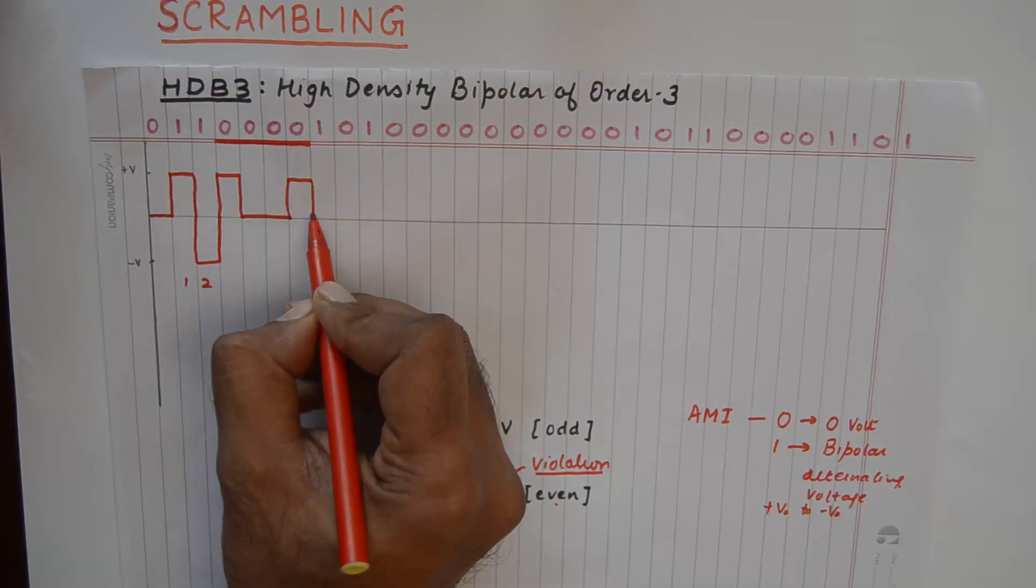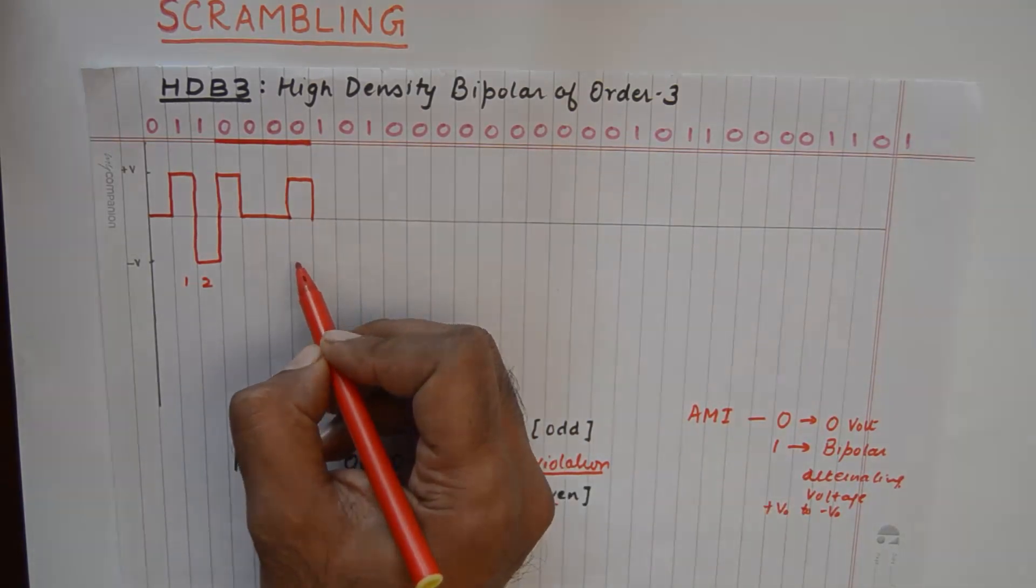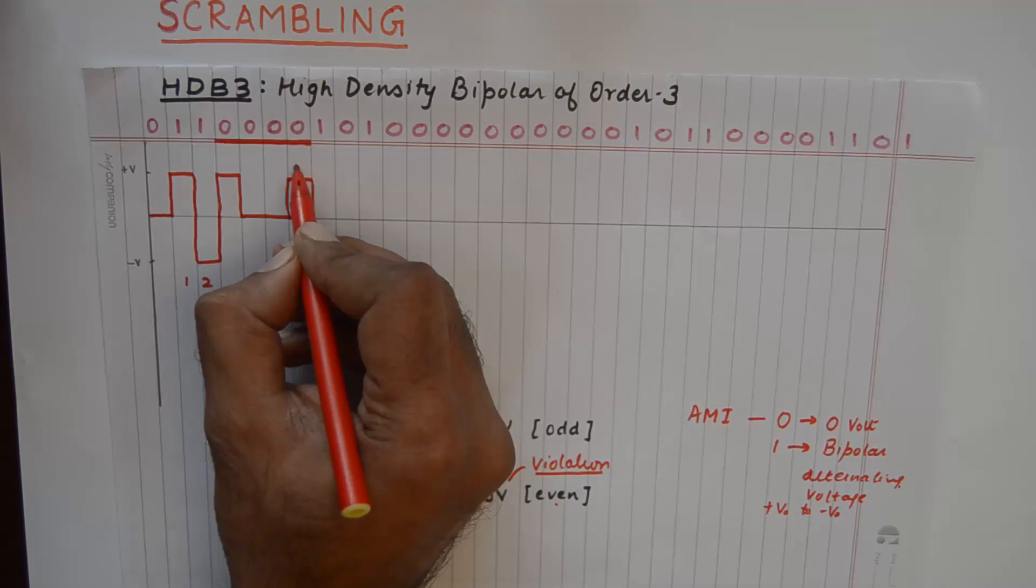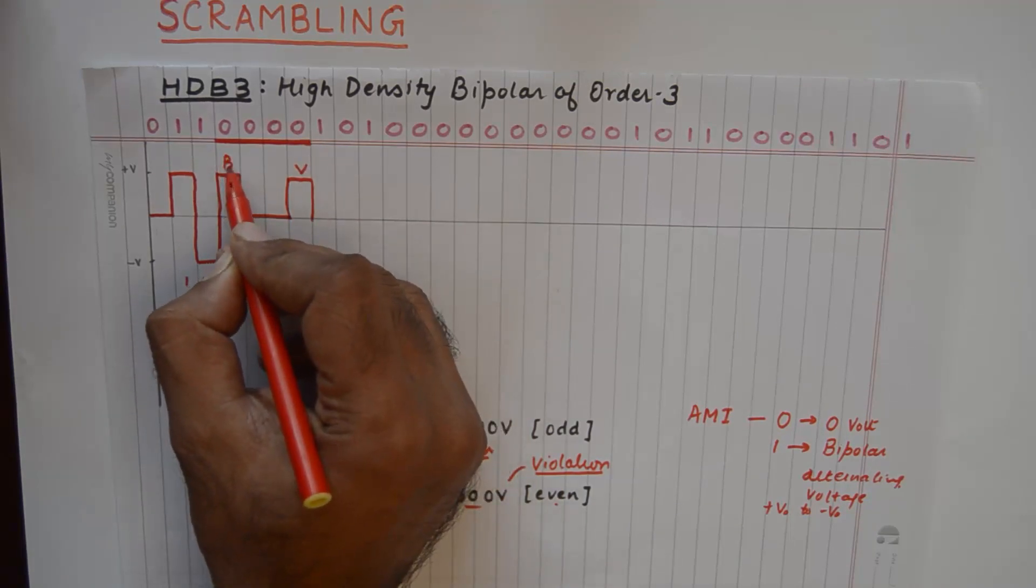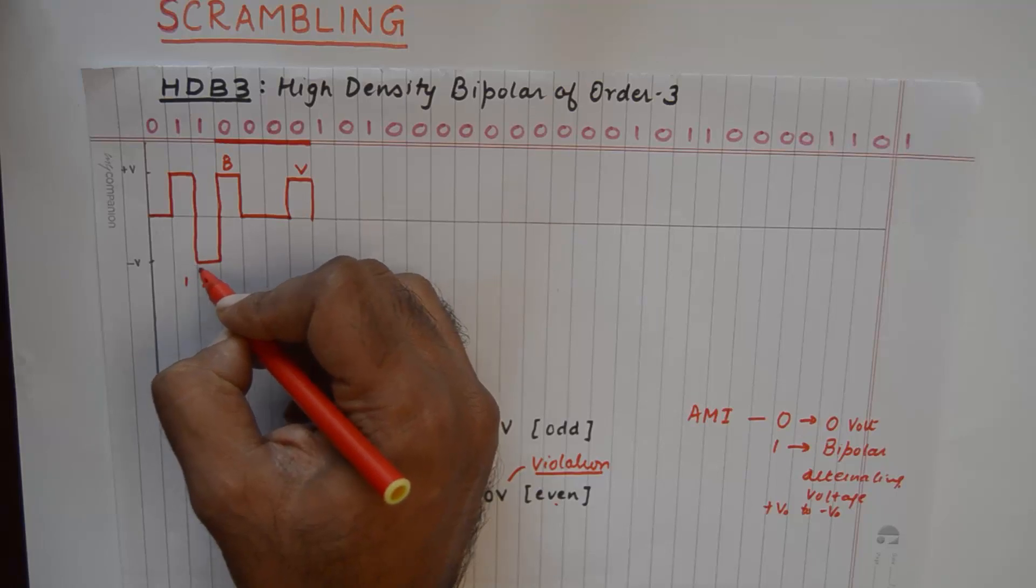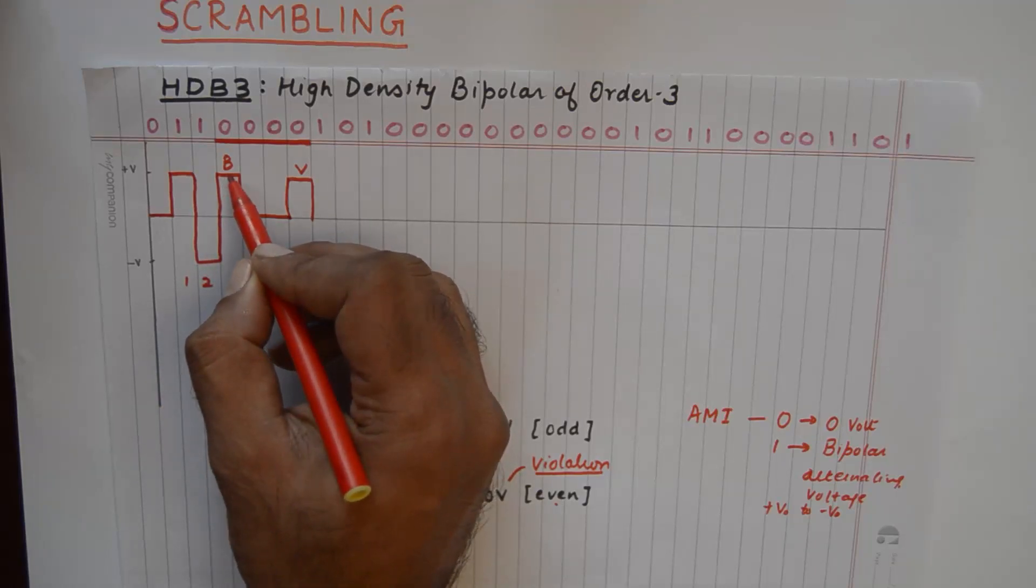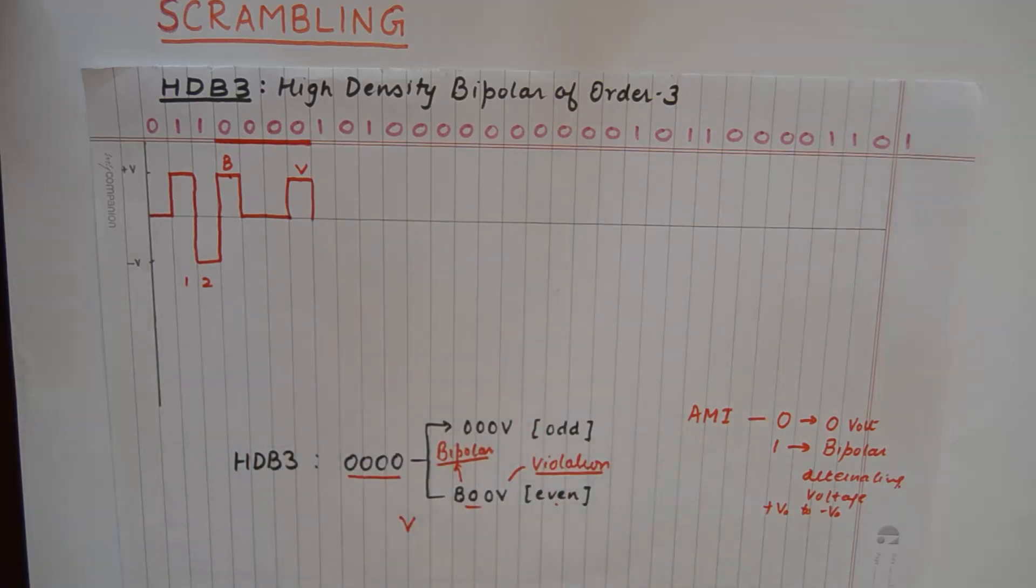Had it transitioned normally, according to the rules of alternate mark inversion, it should have gone down. But because this is a violation and this is a normal transition alternating from its previous value, so this becomes a B and this becomes a V as in violation.